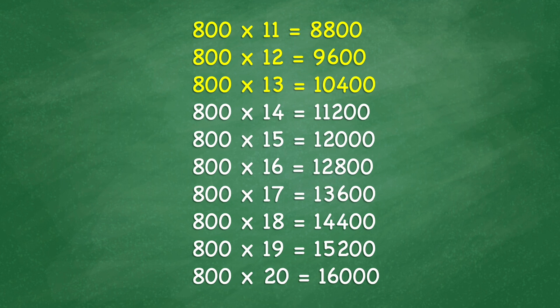800 times 14 equals 11,200. 800 times 15 equals 12,000. 800 times 16 equals 12,800.